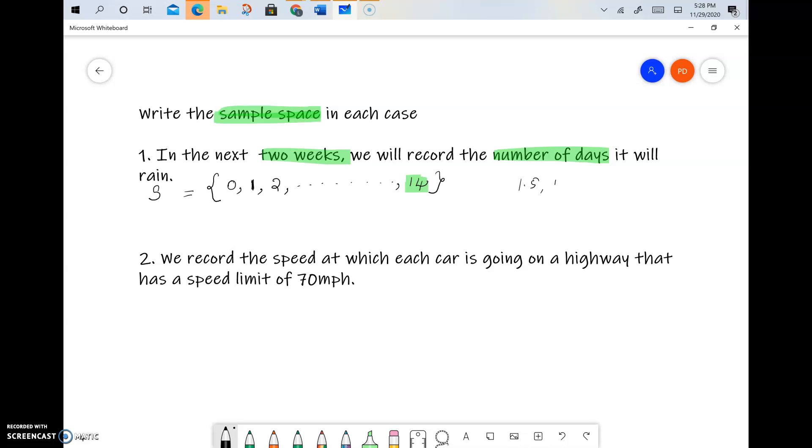If not, the list continues. And remember that we cannot have anything like 1.5 or 1.25 or radical 7. These numbers are not possibilities because the number of days just means counts, and that's why we have 0, 1, 2, 3, 4, dot dot dot, 14.